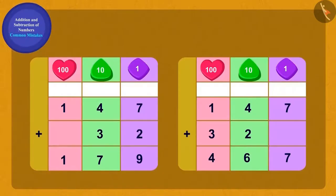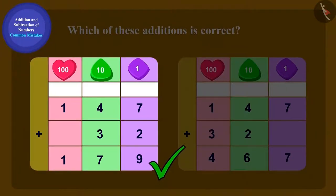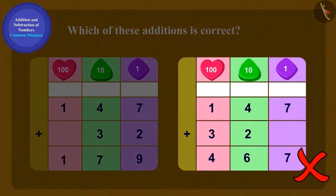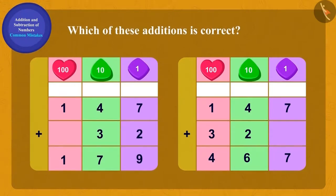Children, can you tell which of these additions is correct? Yes, you got it right, this addition is correct. But why is this wrong? Absolutely right, here while writing a two digit number 32 we have written the digits in the wrong place.